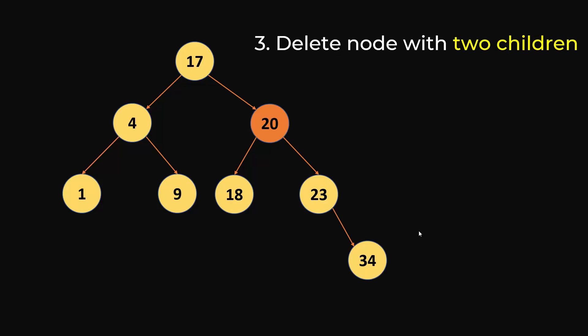The most tricky case is deleting a node with two children. When you delete 20, after deletion you have to rebalance your tree so that the basic properties of the binary search tree hold true. Those properties are: all elements should be unique, for a given node the elements in the left subtree should have a value less than the current node value, and all elements in the right subtree should have a value greater than the current value.